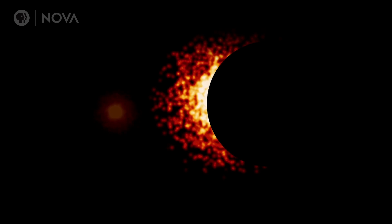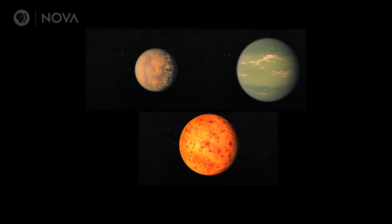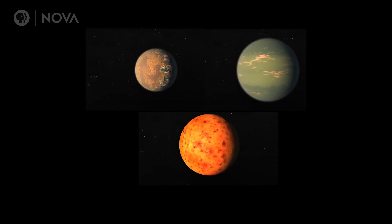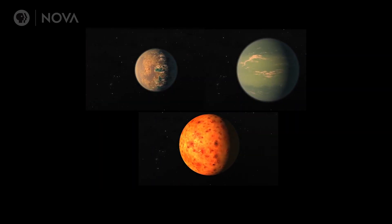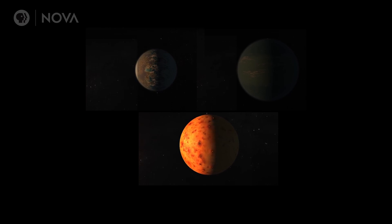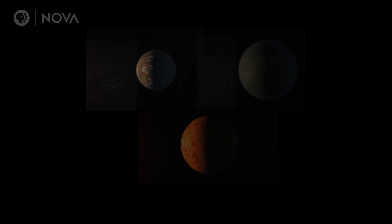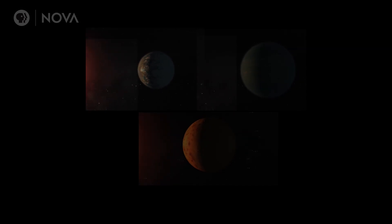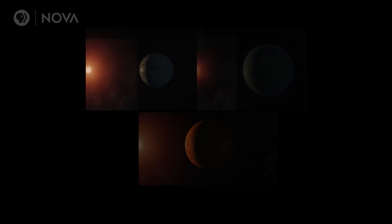You need to see something faint next to something really bright. We are talking about planets which are a few hundreds, a few thousands, a few tens of thousands times fainter than their stars.